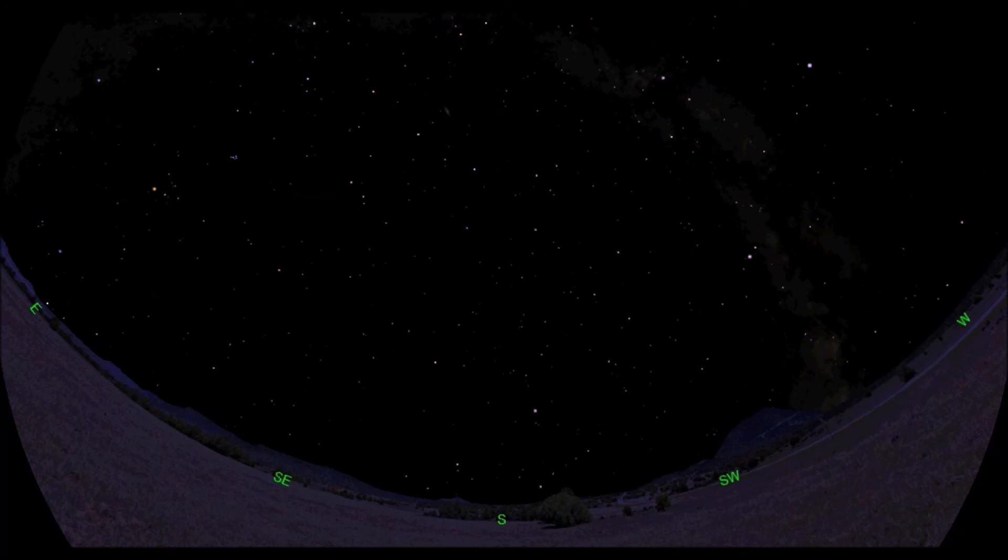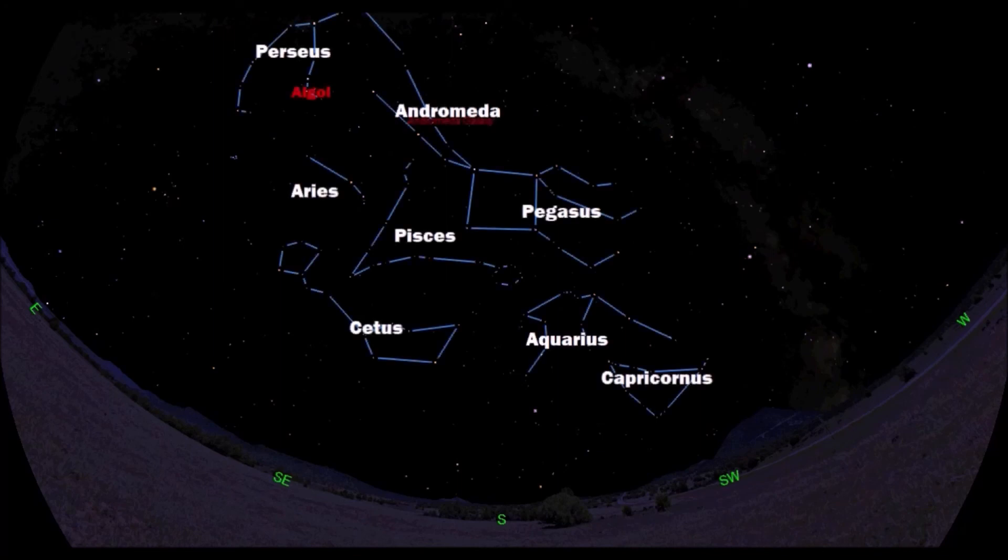And with that we now know our autumn sky. These would be all the constellations, one star and one object you are responsible to know. Pegasus again, our iconic constellation of Pegasus. Four zodiacs of Aries, Pisces, Aquarius, and Capricornus. Andromeda and Perseus, husband and wife. Algol, the demon's head of Medusa. And of course Cetus the sea monster all below.